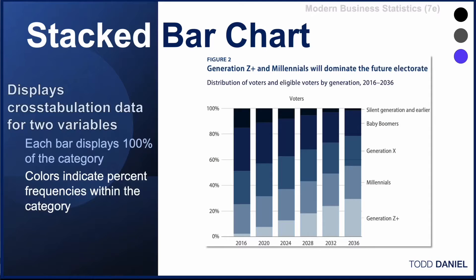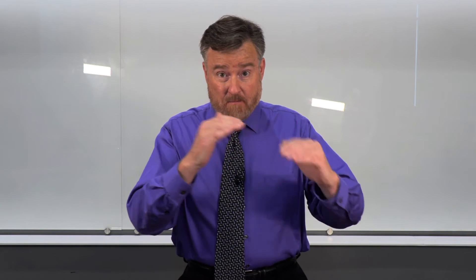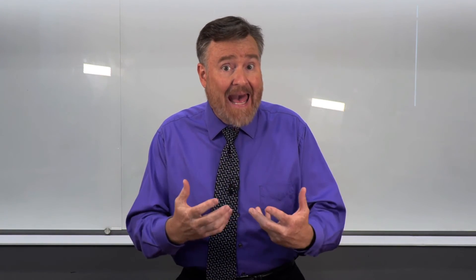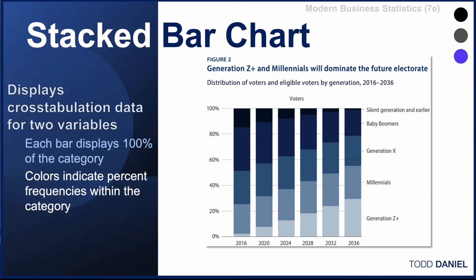Let's look at the distribution of these generations within the voting populace. What we can see is that over time — for instance in 2024 — over 60% of voters will be Generation X, Millennials, and Generation Z, and that percentage continues to increase for the subsequent years of 2028 and beyond. Remember that with a stacked bar chart, we lose the ability to compare between, but we maintain or add the ability to compare within variables. This makes it very useful for time series data, where we are comparing across time.